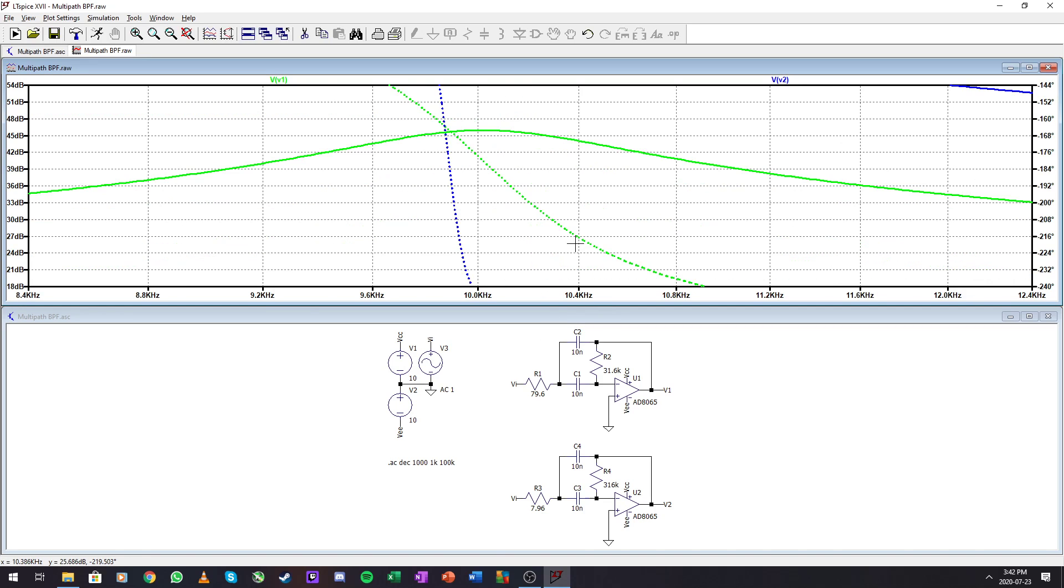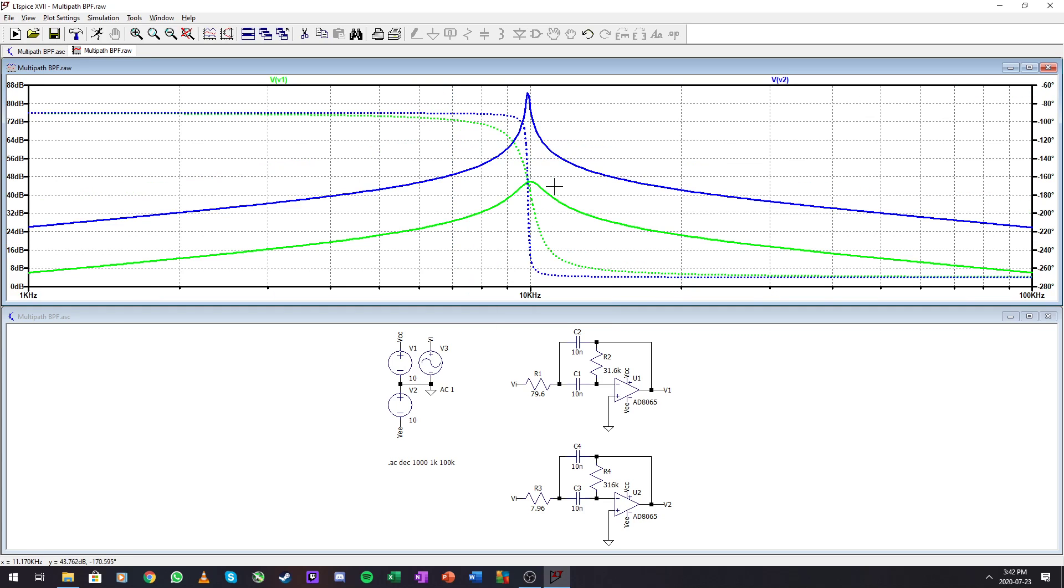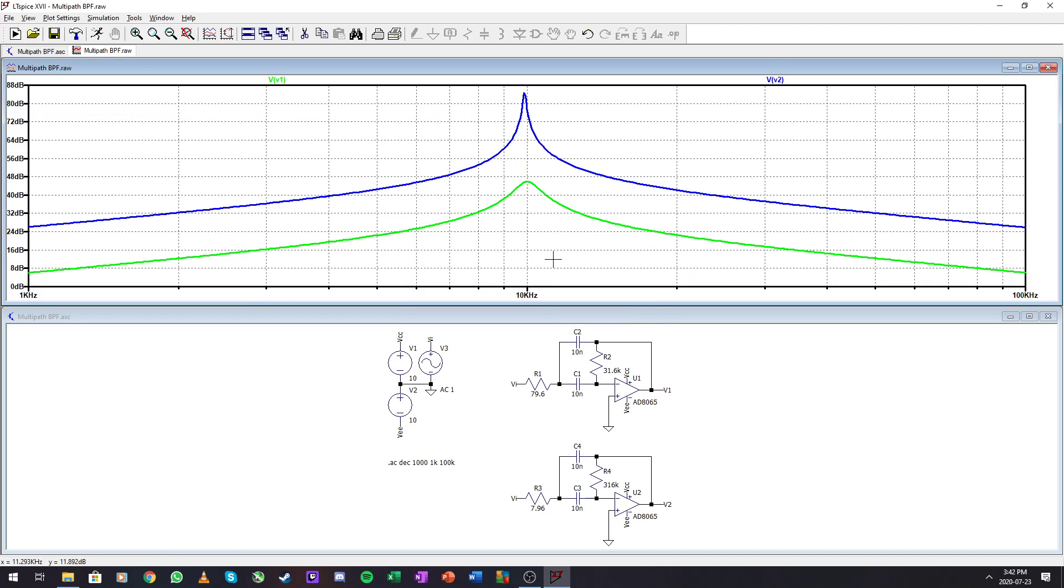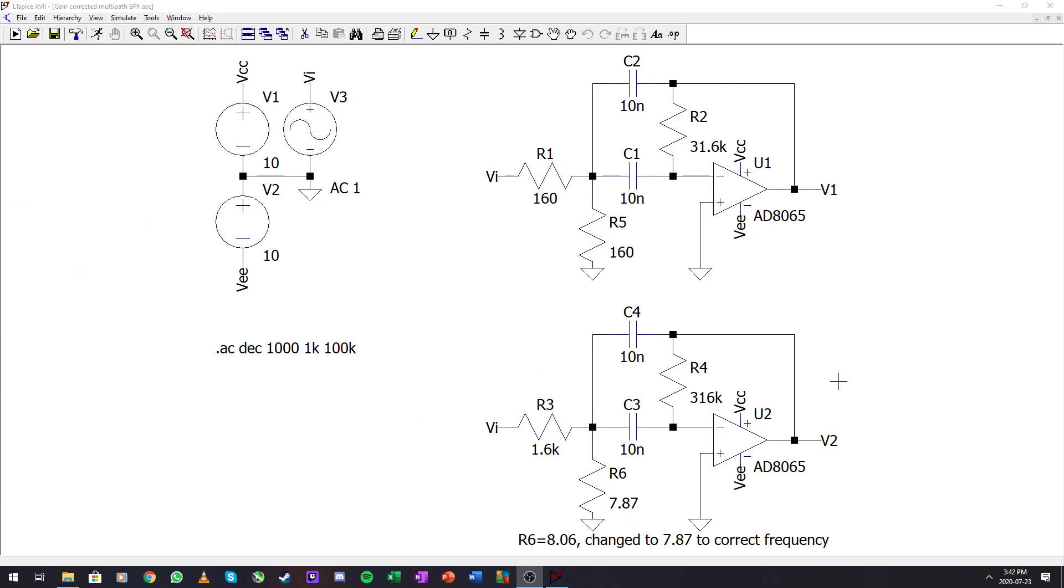At the lower Q factor, it's not as apparent that there is a bit of a mismatch. But for this high Q, we can see it quite clearly. Both have a nice gain. We can see the Q factor nicely. Let's jump over to the gain corrected versions of these filters.